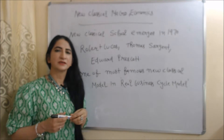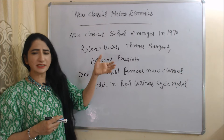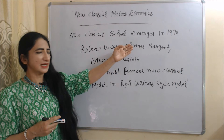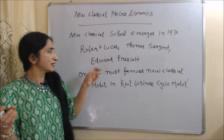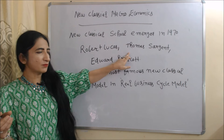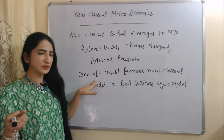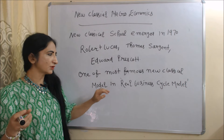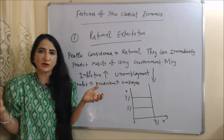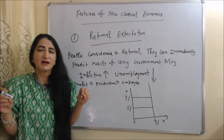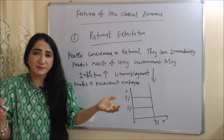Now we are going to talk about new classical macroeconomics. The new classical school emerged in the 1970s, and leading economists include Robert Lucas, Thomas Sargent, and Edward Prescott. One of the most famous new classical models is the real business cycle model. Now we are going to talk about the features of new classical economics. The first feature is rational expectations.